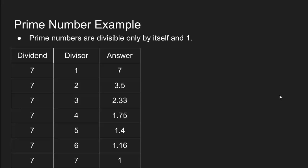Seven divided by three gives you 2.33, not perfectly divisible. Seven divided by four gives you 1.75, not perfectly divisible. Seven divided by five gives you 1.4, not perfectly divisible. Seven divided by six gives you 1.16, not perfectly divisible. Seven divided by seven gives you one, perfectly divisible. As depicted in all these calculations, seven is only perfectly divisible by one and seven itself. That's why seven is prime.